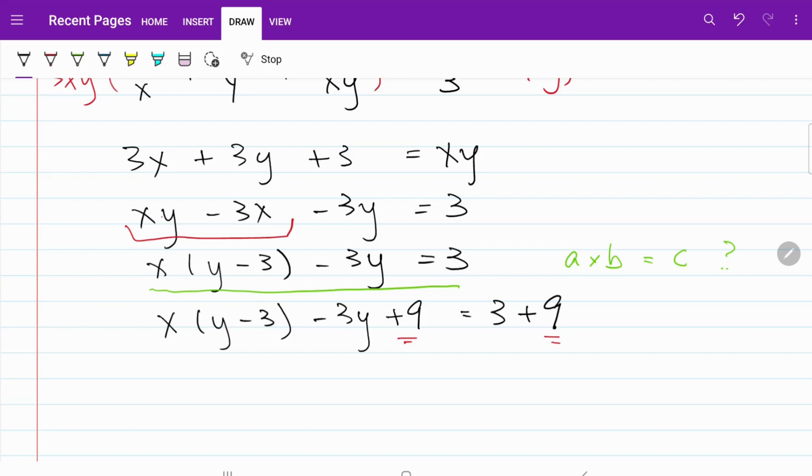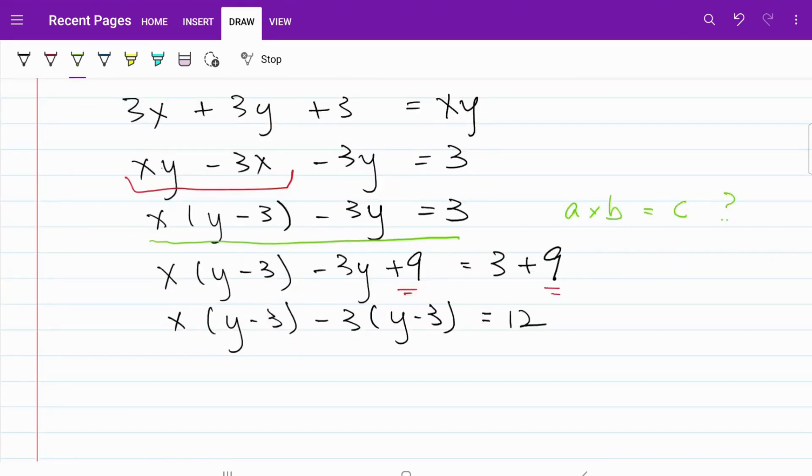When we do that, I can rewrite the left hand side as xy minus 3 minus 3y minus 3, that's equal to 12. I have y minus 3 in the bracket as the common term. So now on the left hand side, I can write this as x minus 3 times y minus 3 equals to 12.